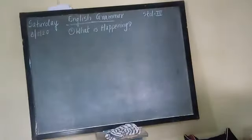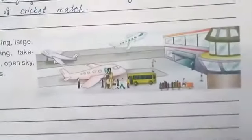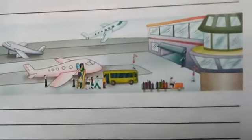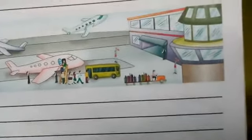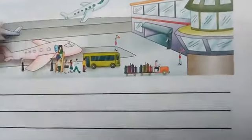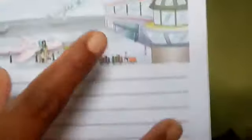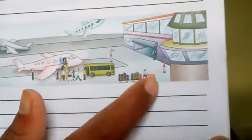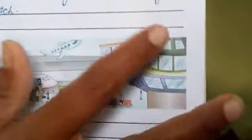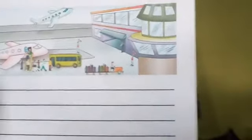I will show you the picture — yesterday I was showing you but it was not visible, now I will show you. It is of an airport. Can you see it? Now observe it properly. There is one aeroplane which is taking off, there is another aeroplane taking off here also, and one aeroplane from which passengers are coming out. They are sitting in the bus, then there is another vehicle where luggage is taken. The airport building is there, and there is an open space with open sky.